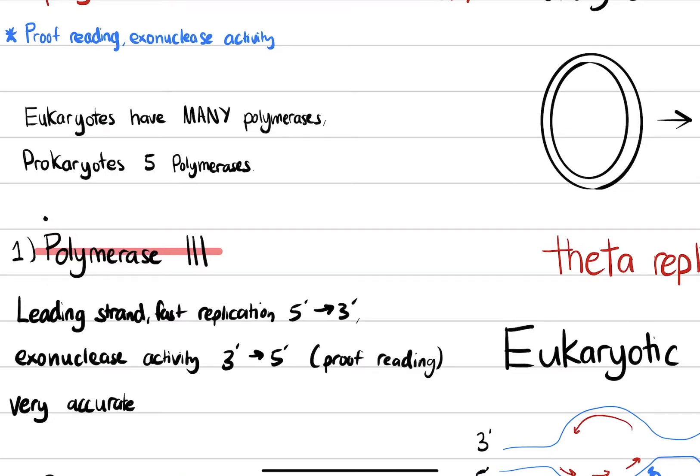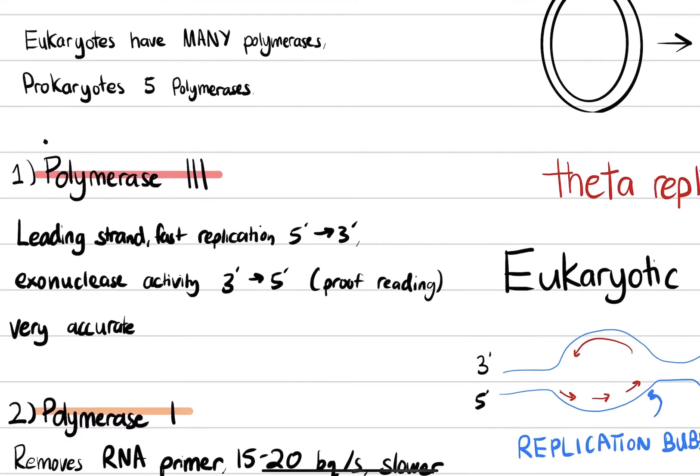The first one is DNA polymerase III. DNA polymerase III functions and works with the leading strand. It's fast replication because of the 5' to 3' end, and the exonuclease activity happens in the opposite direction, 3' to 5'. This is proofreading. So if we have a DNA strand that is newly synthesized by DNA polymerase III, what's going to happen next is...